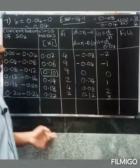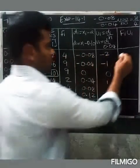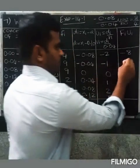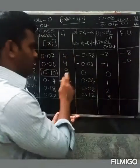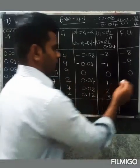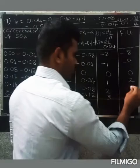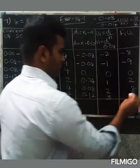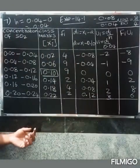Now we compute fᵢ × uᵢ: 4 × (minus 2) = minus 8. 9 × (minus 1) = minus 9. 9 × 0 = 0. 2 × 1 = 2. 4 × 2 = 8. 3 × 3 = 9. Wait — correcting: 4 into 2 = 8, and 3 into 2 = 6.